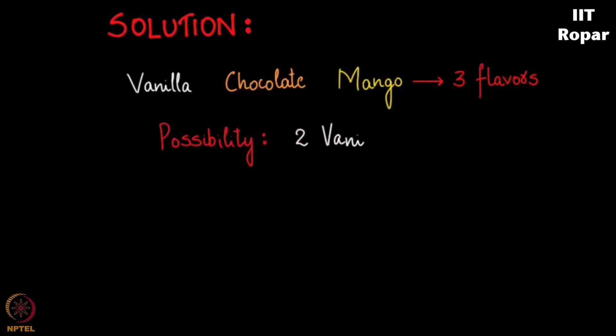A possibility is two vanilla, three chocolate, let's say four chocolates and four mango, amounting to ten. Or let's say one vanilla, one chocolate, and eight mangoes, right?